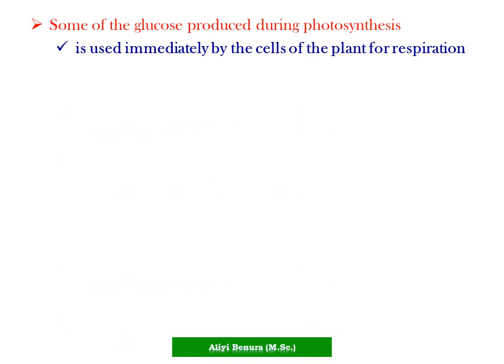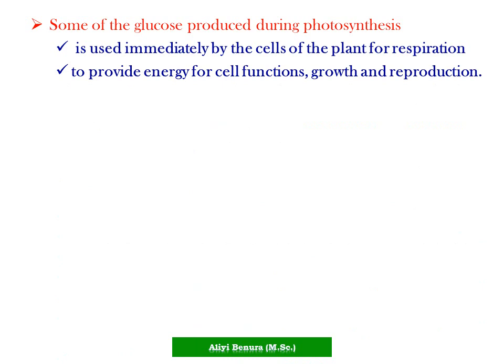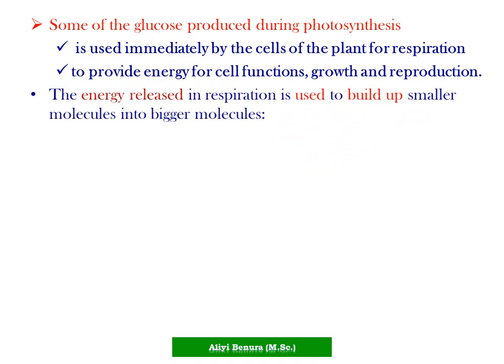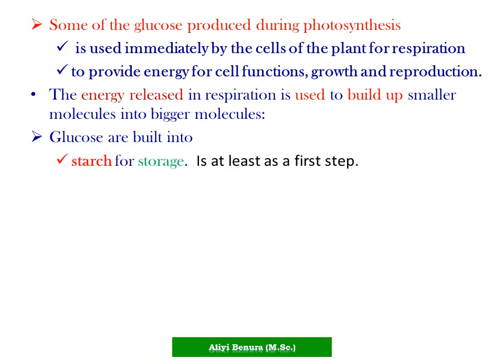Some of the glucose produced during photosynthesis is used immediately by the plant cells for respiration, and also to provide energy for cell function, growth, and reproduction. The energy released in respiration is used to build smaller molecules into larger molecules — for example, glucose is built into starch for storage.